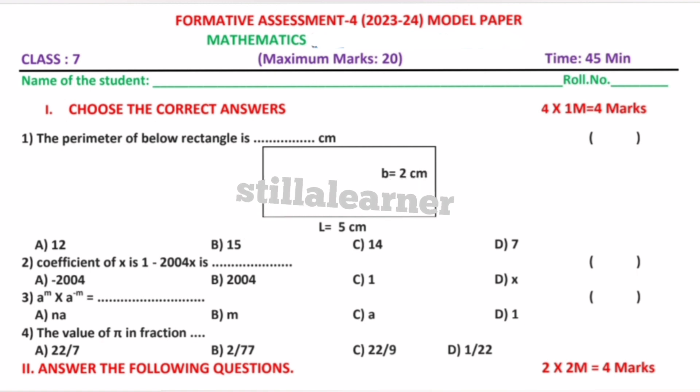So let's see. This question paper carries 20 marks and time is 45 minutes. In the first Roman numeral, you are going to have choose the correct answers. Four choices will be there and each question carries one mark, that is four multiplied by one equal to four marks.